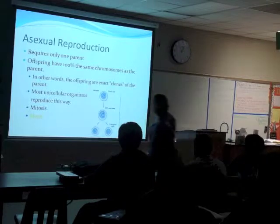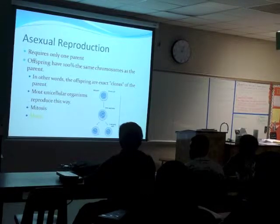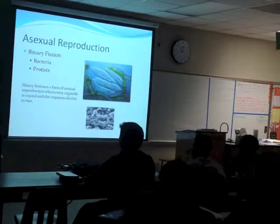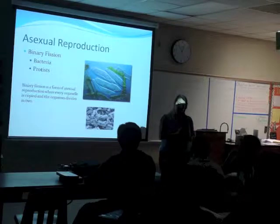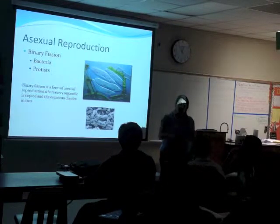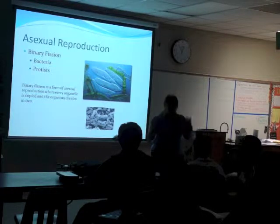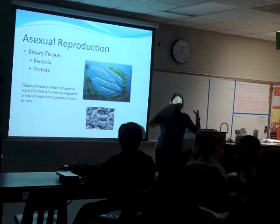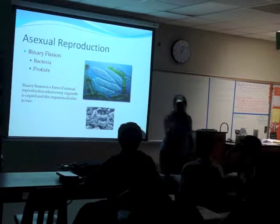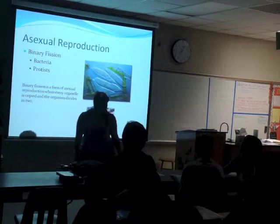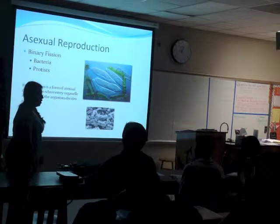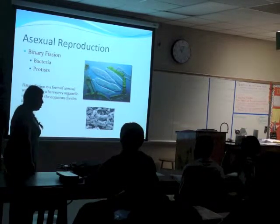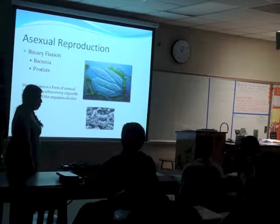So asexual reproduction: one parent, 100% of the offspring will be exactly the same. Cancer cells are cells that reproduce and go through asexual reproduction and they don't stop — they keep going and going. That's what tumors are: basically overgrown cells, too many cells. That's basically what cancer is. Chemotherapy and radiation treatment are used to kill those cells and try to stop them from continuing to grow.